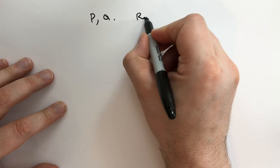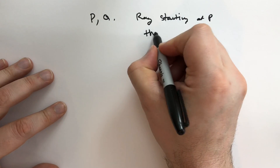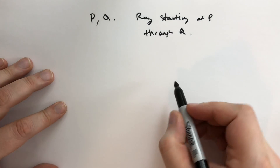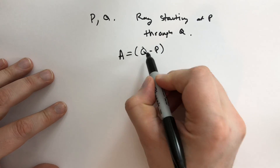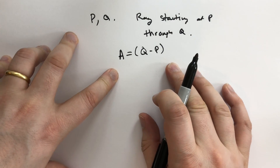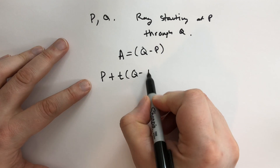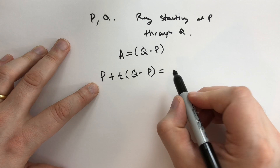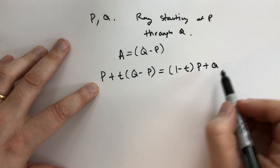Now suppose that we had two points P and Q, and we want the ray starting at P that goes through Q. We recall that A is going to be Q minus P using the line segment notation. So we can write this out as all the points P plus t times (Q minus P). You can also rewrite that as one minus t times P plus tQ.